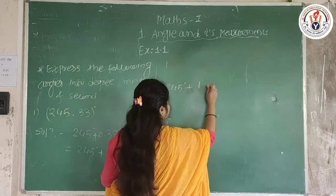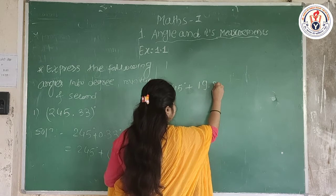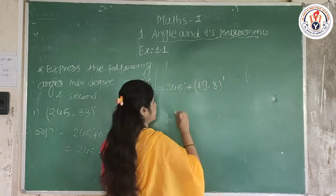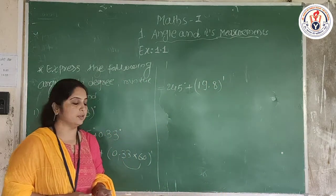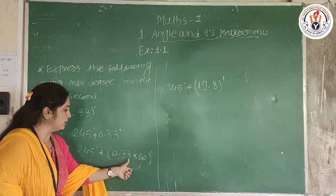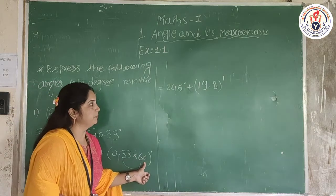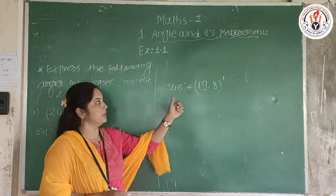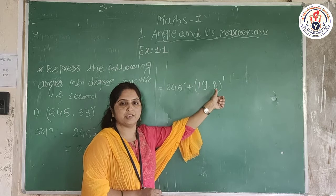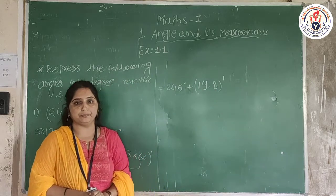So 0.33 degrees multiplied by 60 gives 19.8 minutes. Now we have 245 degrees plus 19.8 minutes.